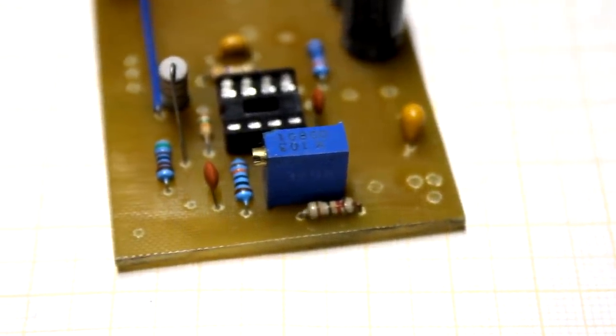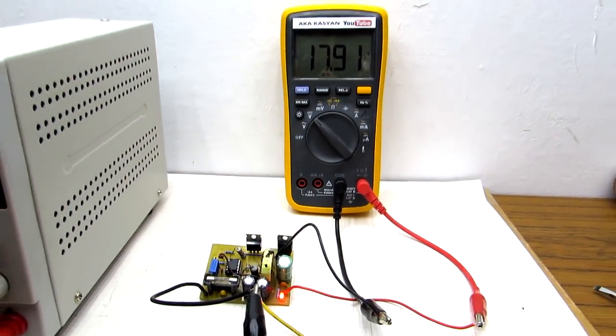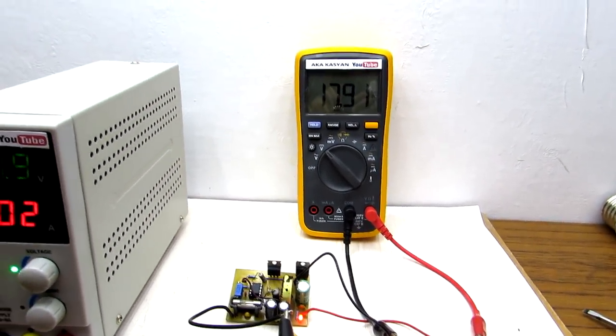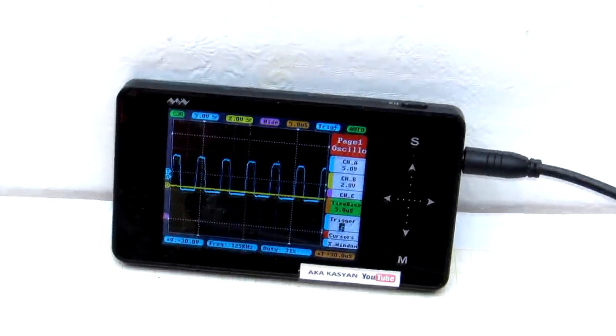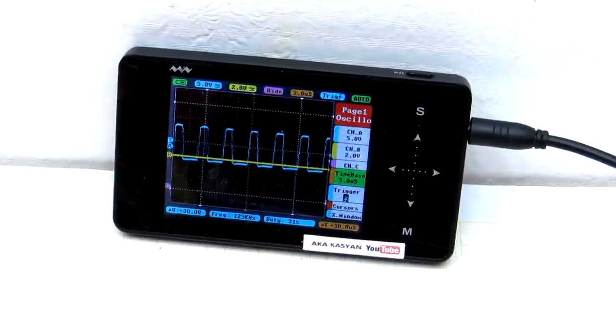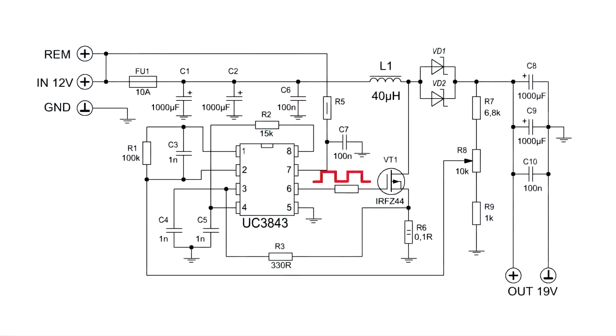I set slightly less than 18 volts since I need this converter for other purposes. The microcircuit generates rectangular pulses with a frequency of about 125 kHz. The signal goes to the gate of the transistor and it's working.